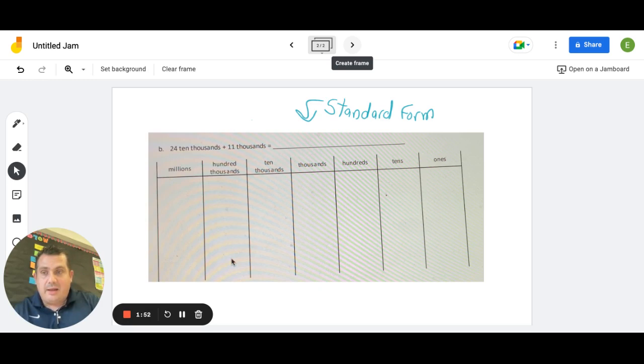Let's go green here. 24 10,000s. I'm going to go into my 10,000s column. 1, 2, 3, 4, 5, 6, 7, 8, 9, 10, 11, 12, 13, 14, 15, 16, 17, 18, 19, 20, 21, 22, 23, 24. So there is my 24 10,000s.